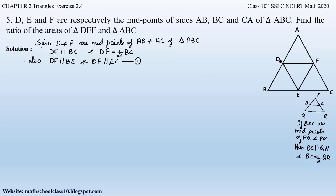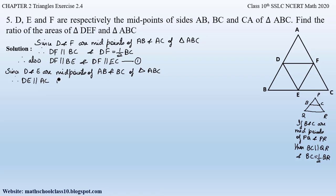Similarly, D and E are midpoints of AB and BC, so DE is parallel to AC and DE equals half of AC. Since DE is parallel to AC, it is also parallel to AF and FC. So DE is parallel to AF and DE is parallel to FC. Let this be equation two.